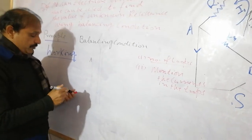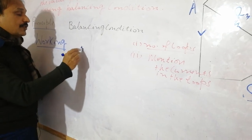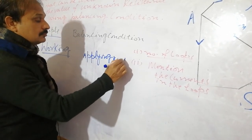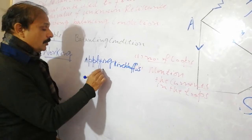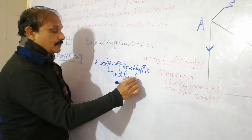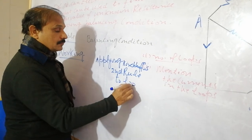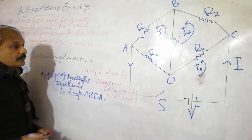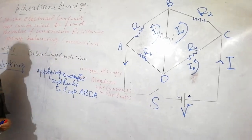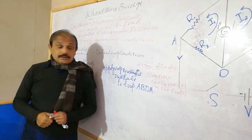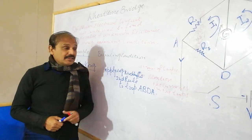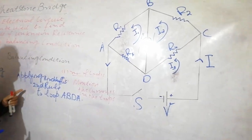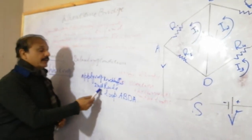We are applying Kirchhoff's second rule — that is, the Kirchhoff Voltage Law — to loop A-B-D-A. This rule deals with potential changes. We will apply KVL to loop A-B-D-A.